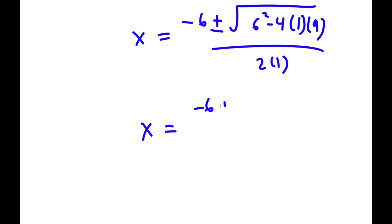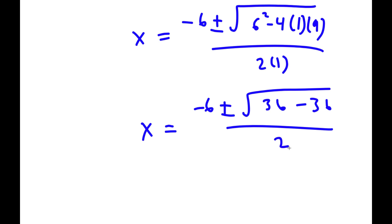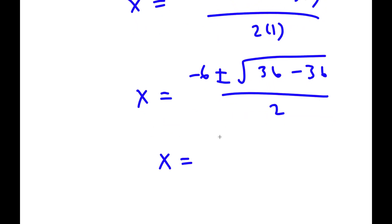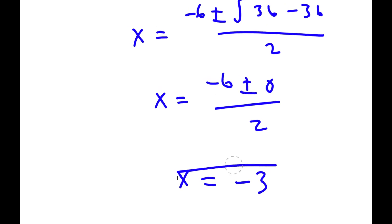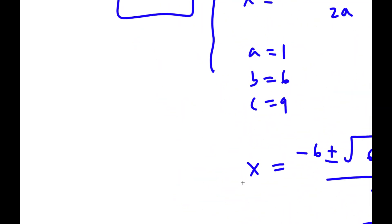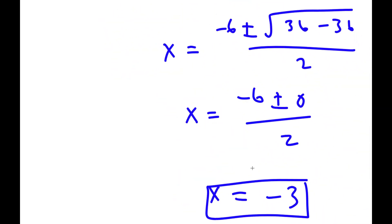To simplify, I have negative 6 plus or minus the square root of 36 minus 36, all over 2. This equals negative 6 plus or minus the square root of 0, all over 2. The square root of 0 is 0, so this simplifies to negative 6 over 2, which is negative 3. So my solutions are x equals 3 and x equals negative 3.